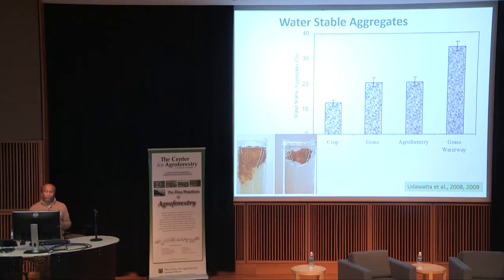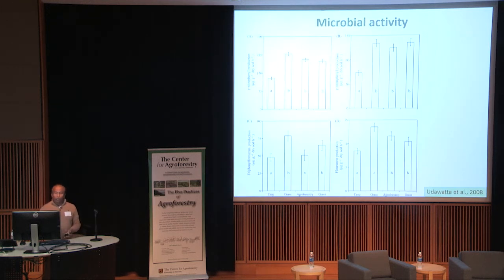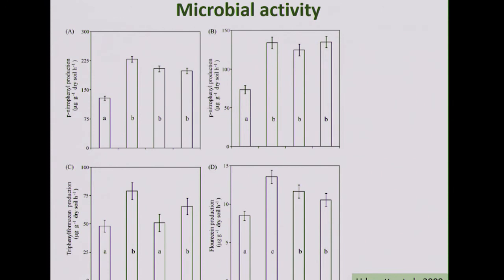A USDA demonstration shows the stability of water-stable aggregates. Agroforestry has much more continuous perennial plant systems and much stronger stable aggregates compared to cropping systems. We also looked at biological parameters — enzyme activity including dehydrogenase, beta-glucosidase, glucosaminidase, and FDA. The crop site always had much lower enzyme activity compared to the perennial systems of grass buffer, agroforestry, or grass waterways.